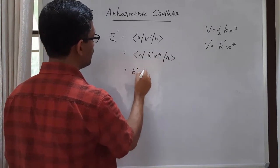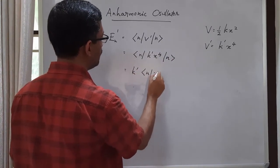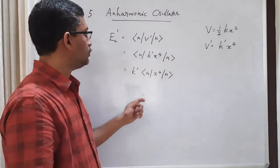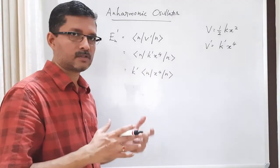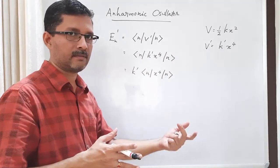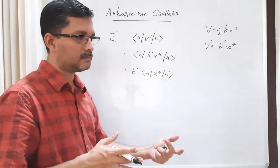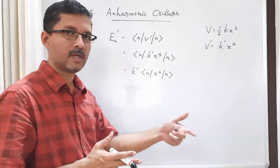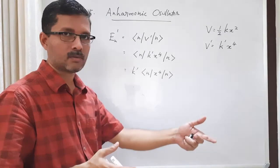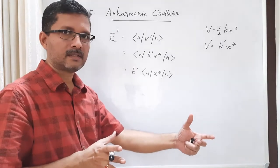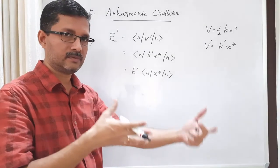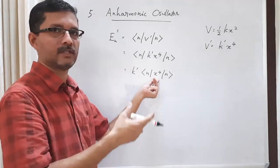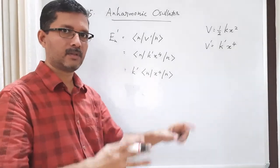k′ is a constant; I can take it outside. So we need ⟨n|x⁴|n⟩. One way to do this: you know how to write x² in terms of a and a†. x² equals (ħ/2mω)(a†² + 2N̂ + 1 + a²), where N̂ is the number operator. Then you can operate it twice to get x⁴ and expand it.